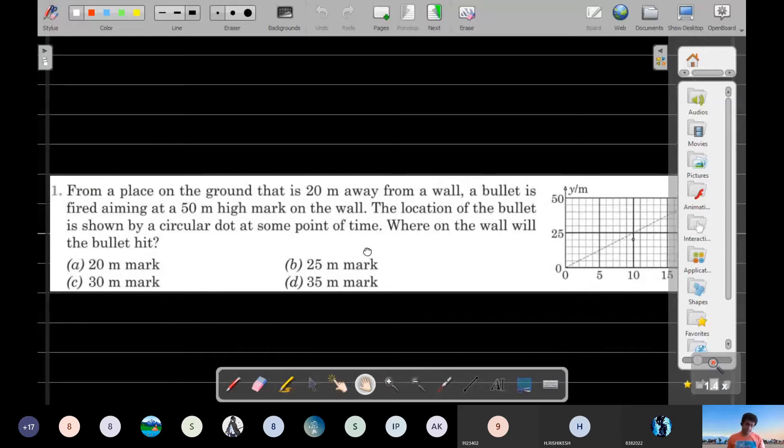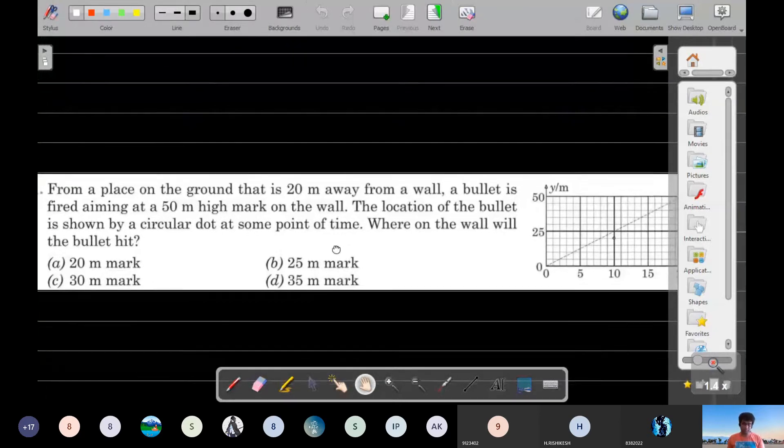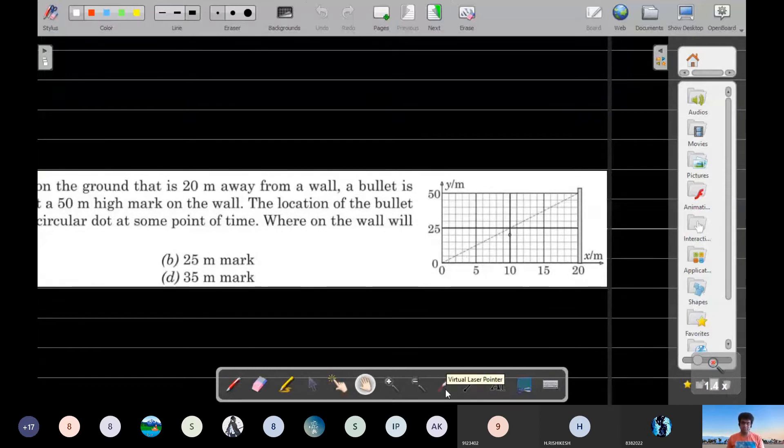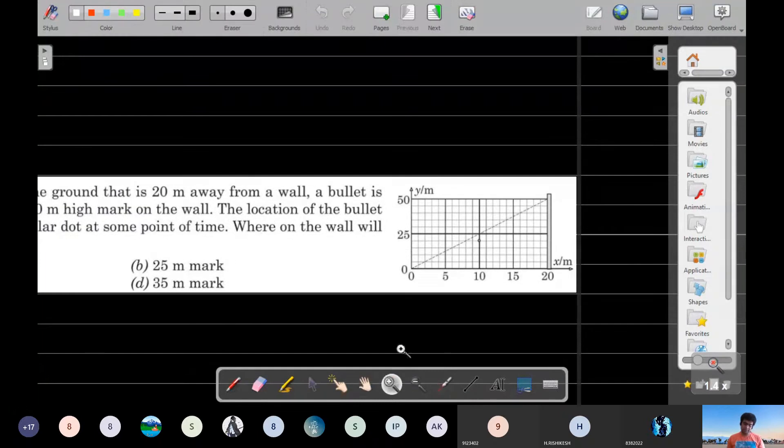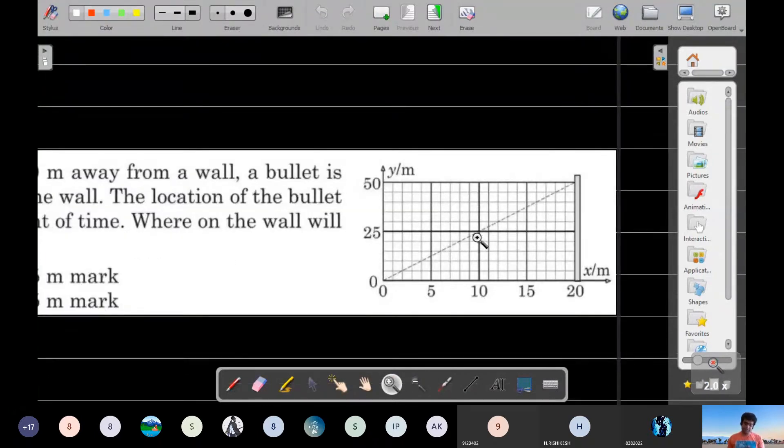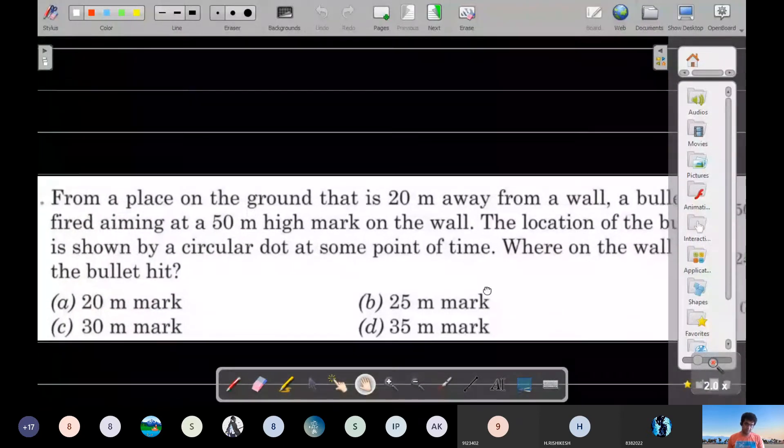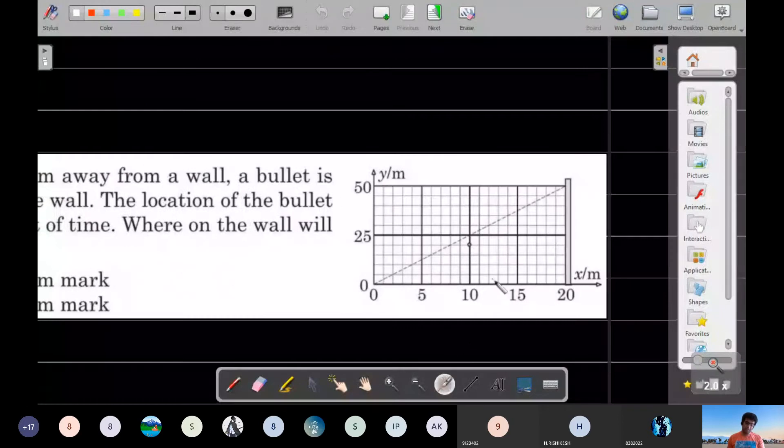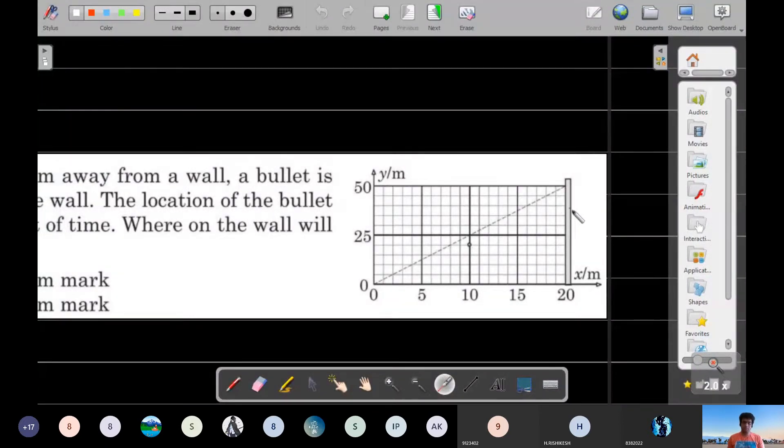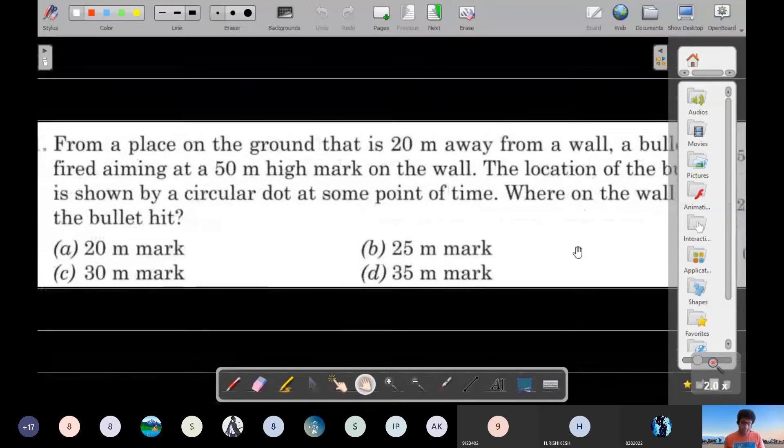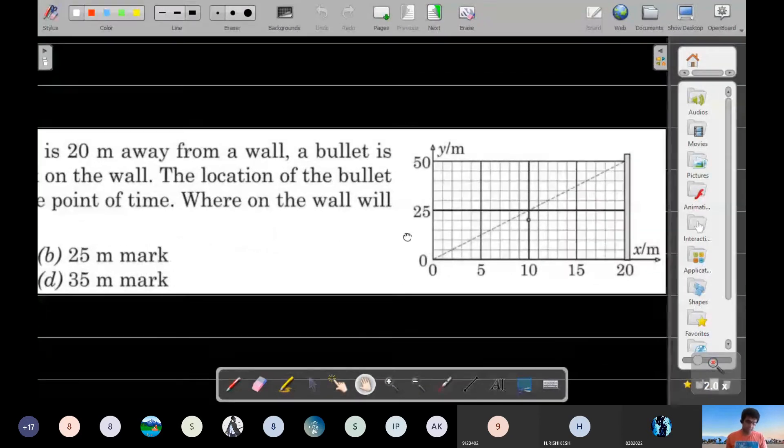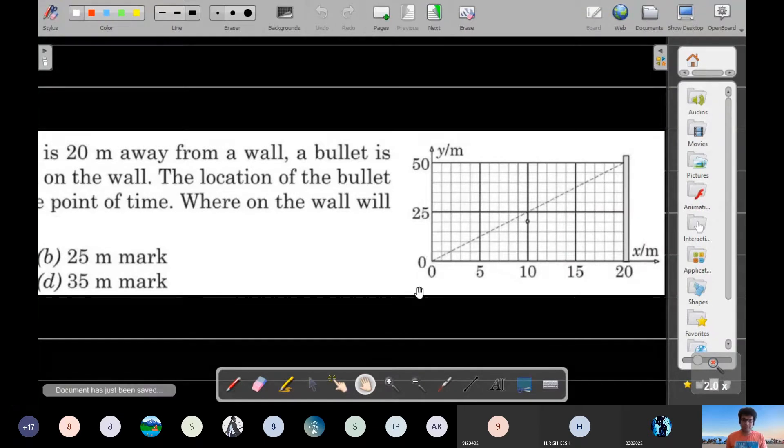The location of the bullet is shown by a circular dot at some point in time. By the time it reached half its journey, instead of being on this, it has already fallen down by some amount. If this information is given, you need to tell me where will the bullet on the wall hit. So you were aiming at the 50 meter mark - obviously the answer should be below 50. I would like you to pause the video and then go ahead with some try.